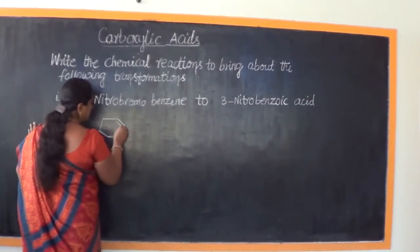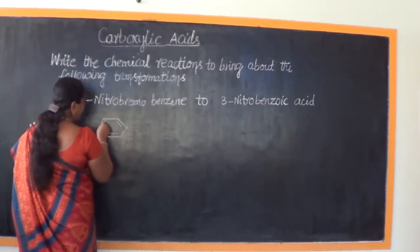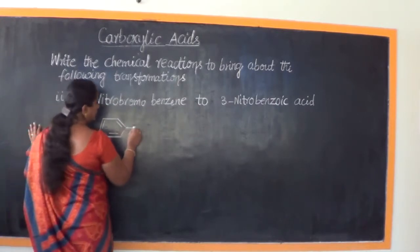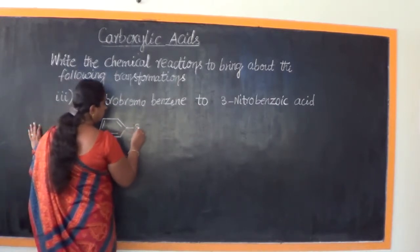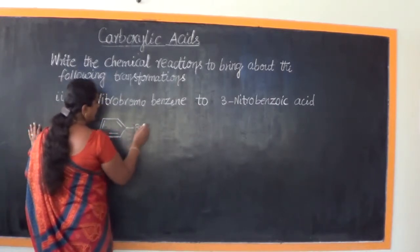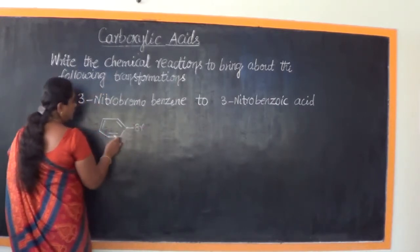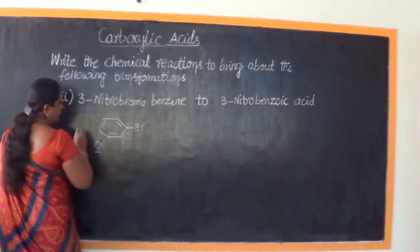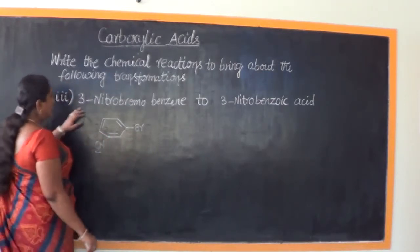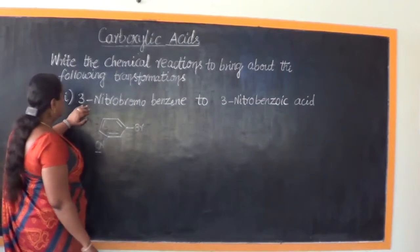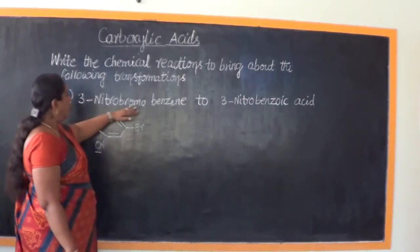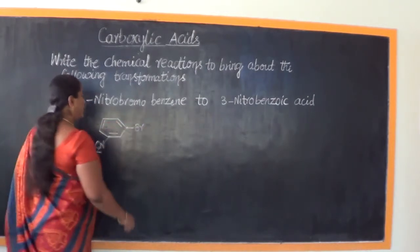There goes our benzene ring. The first carbon atom, second, third — the third carbon atom is linked with the nitro group and the bromo substituent. That is the structure of 3-nitrobromobenzene.